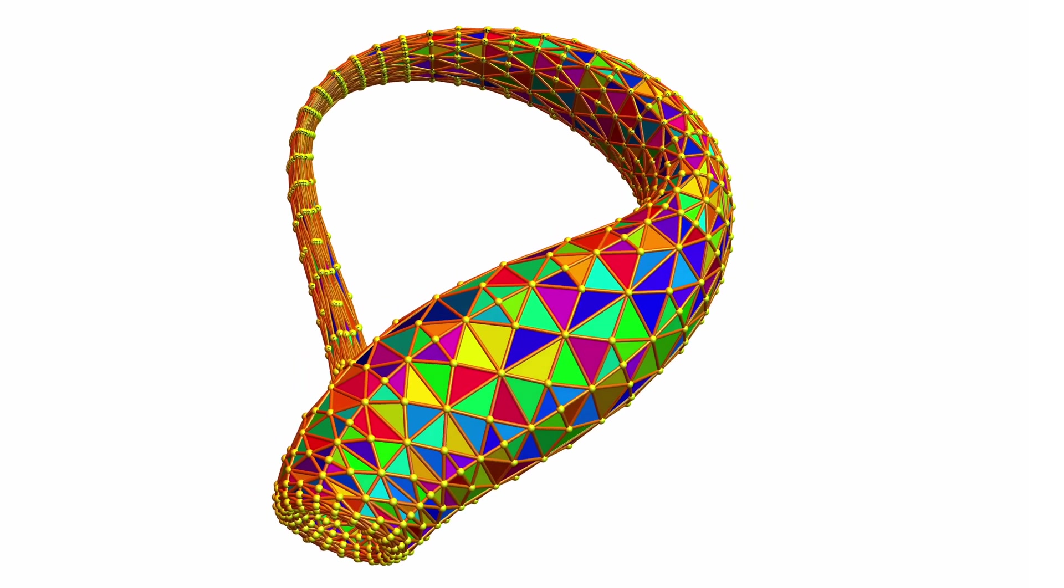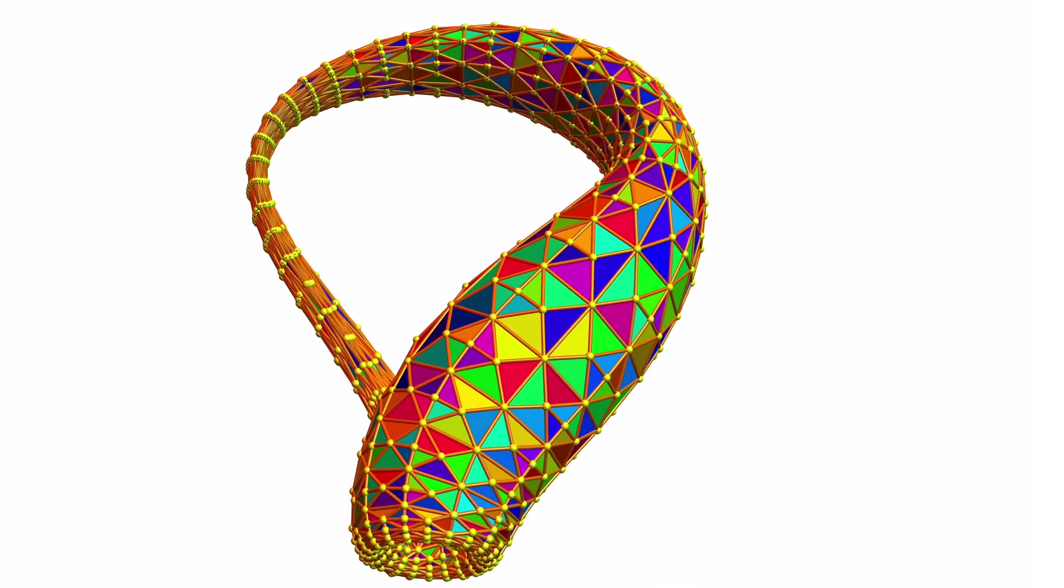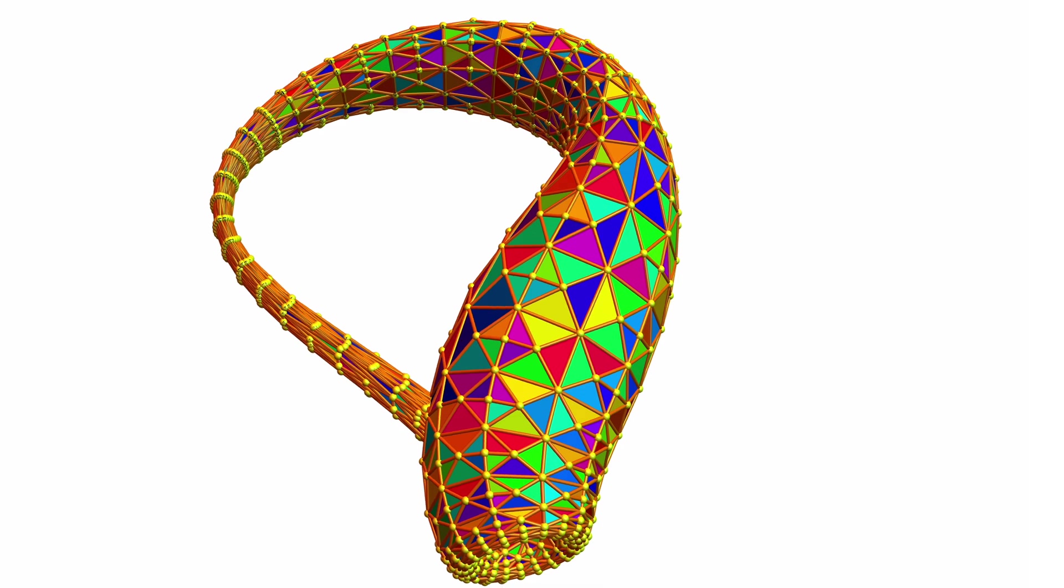One can cut up the Klein bottle along a closed curve to get two Möbius strips. Like the torus, the Euler characteristic is zero.